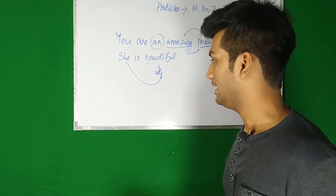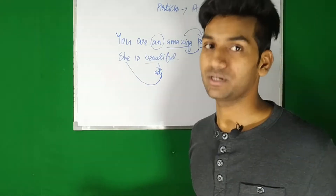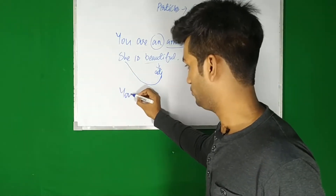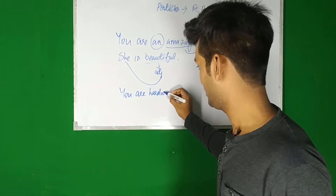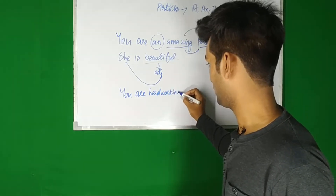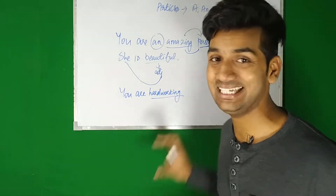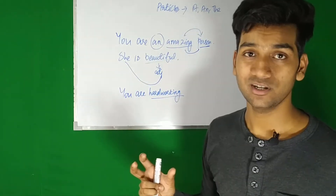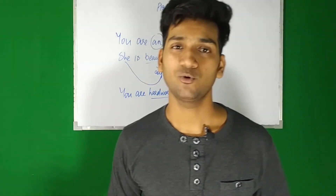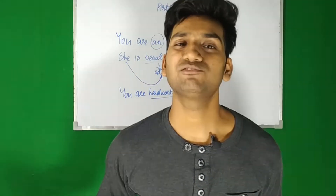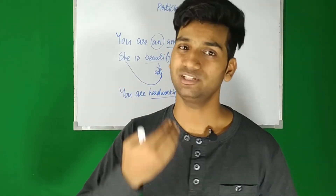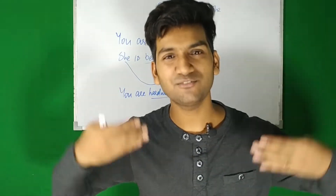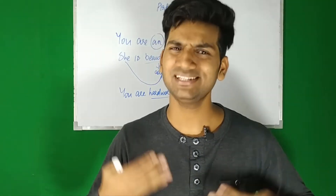'You are hard working' - here 'hard working' is my adjective coming at the end of the sentence. So an adjective either comes before a noun or at the end of a sentence. What does it do? It gives information about the noun or the pronoun, modifies it, paints a vivid picture in our mind, and makes the sentence look informative, colorful. This is what an adjective does.